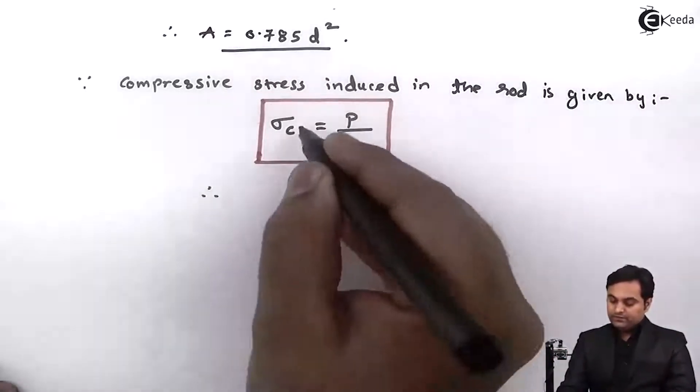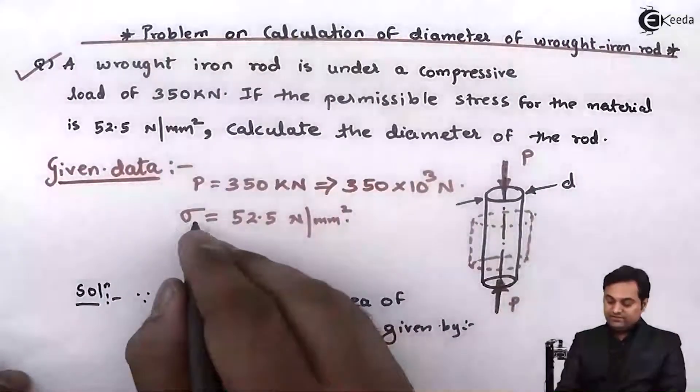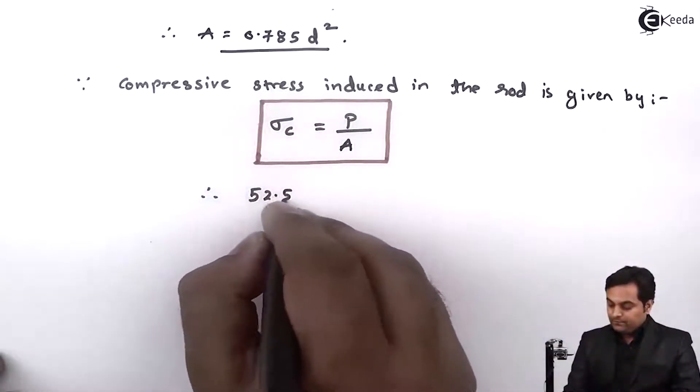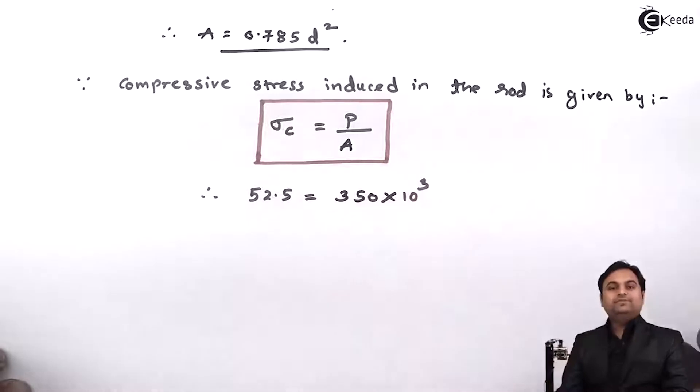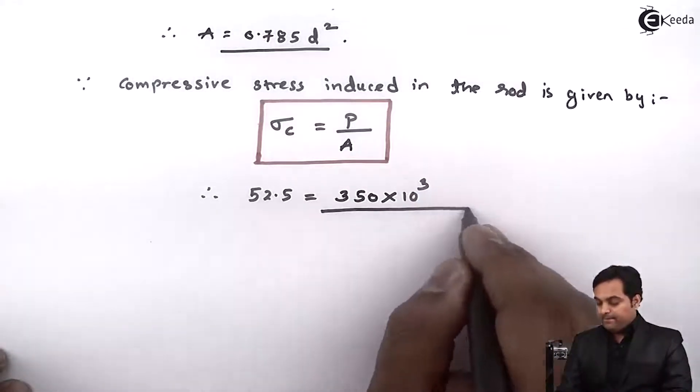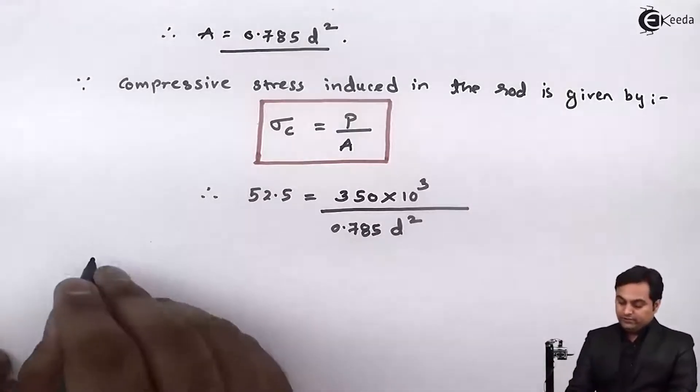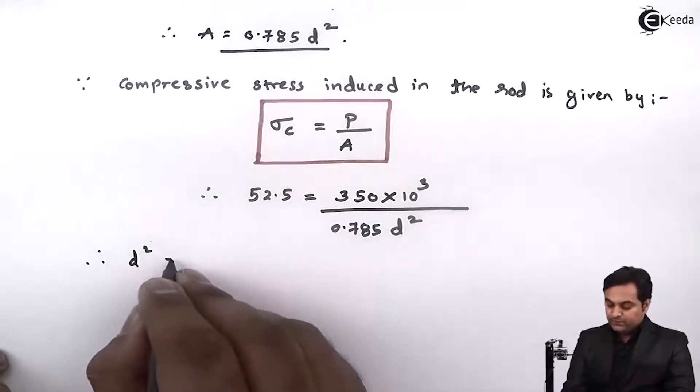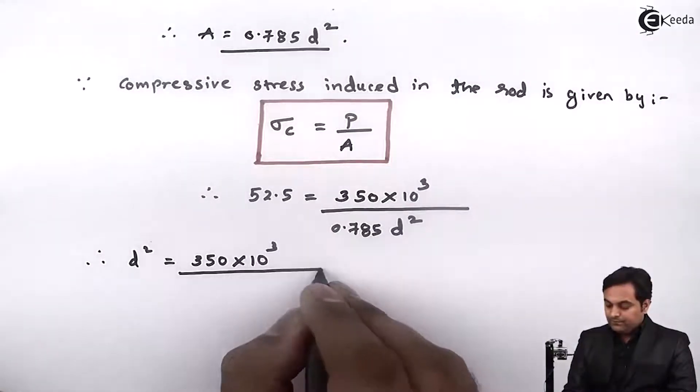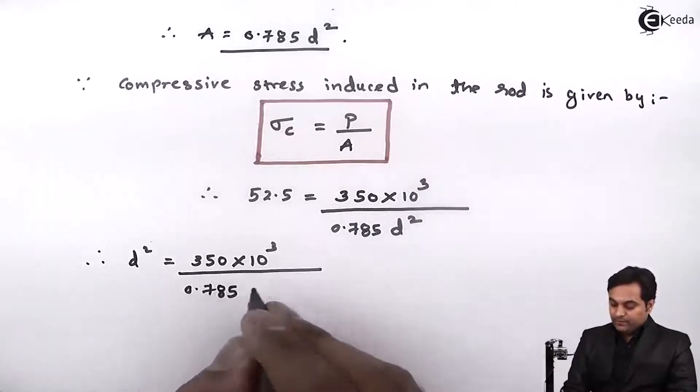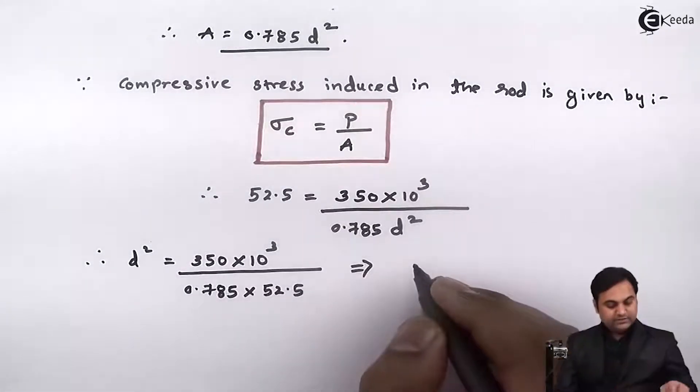Therefore sigma c value 52.5 equals load P which is 350 into 10 raise to 3 divided by area 0.785 d square. Shifting d square to one side, we get 350 into 10 raise to 3 divided by 0.785 into 52.5.